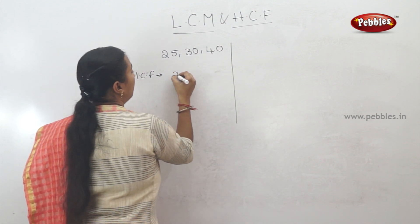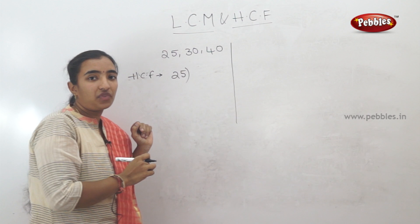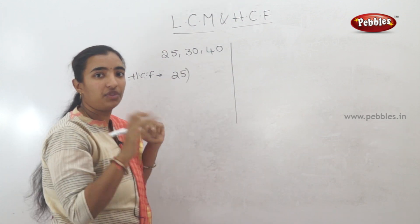For example, take the numbers 25, 30, and 40. We will find the HCF using three numbers.